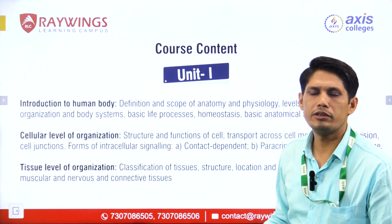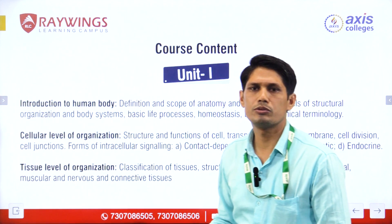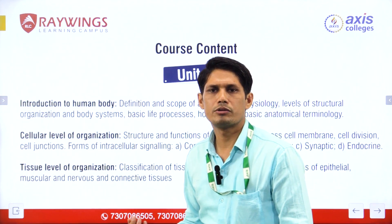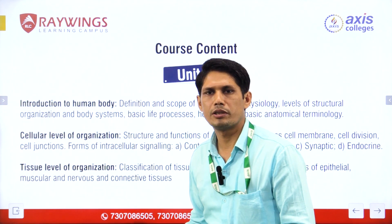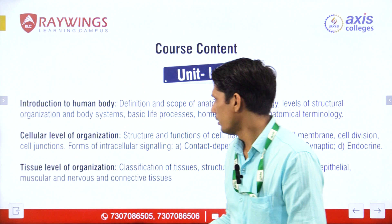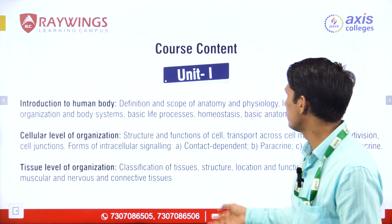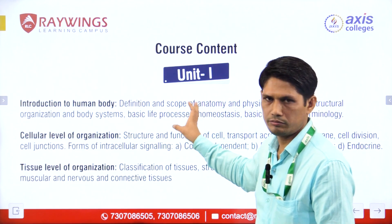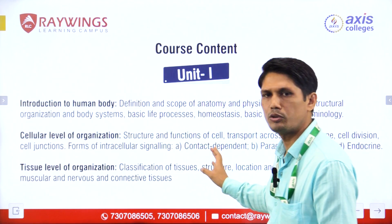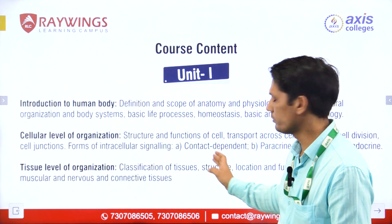The first unit also covers tissues — the different types of tissues including muscular tissue, epithelial tissue, connective tissue and nervous tissue. This is the overview of the first unit of human anatomy and physiology.